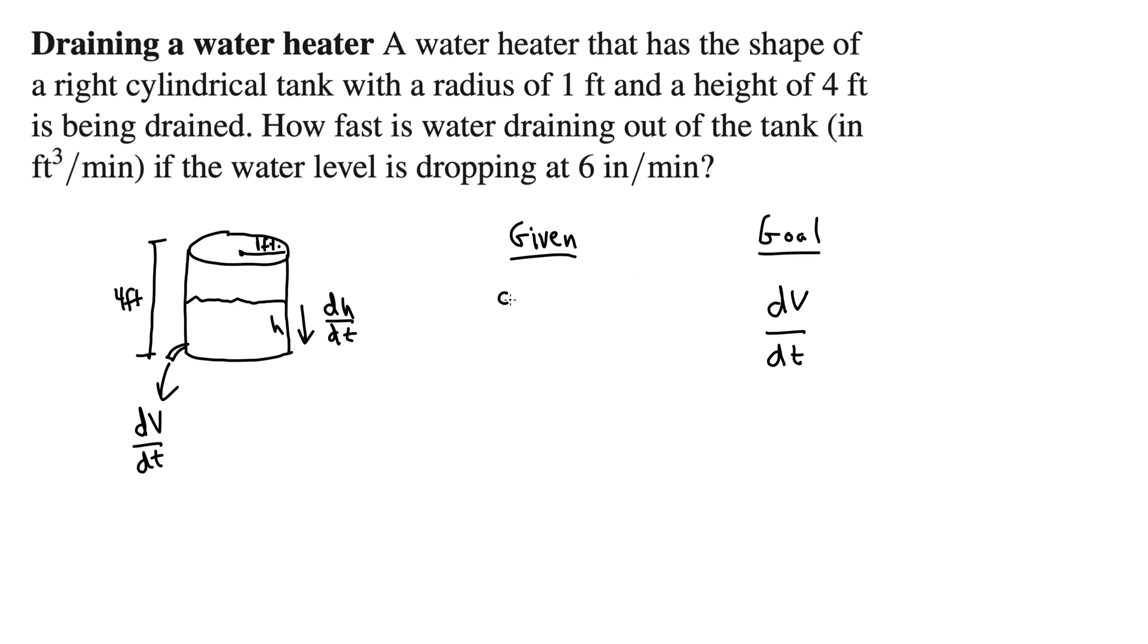Okay, well what's given? Well, dh dt is 6. But I just made an error. Right, this is a little bit tricky and mildly annoying, I'd even venture to say. This is in inches and everything else is in feet. So we should actually write this as 1.5 foot per minute. So let's do that, 1.5. So you do have to check on your units every now and then.